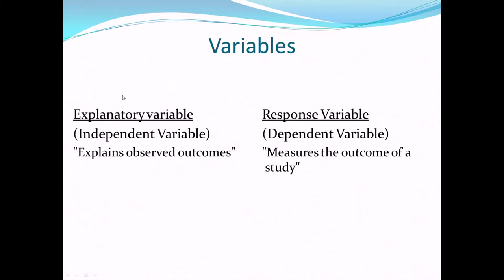In an experimental situation, since you will be imposing something — inputting something into the process — that input is called an independent variable or an explanatory variable. Once you have imposed that treatment, you sit back and check for an effect, or what is the response to it, so that becomes a response variable.